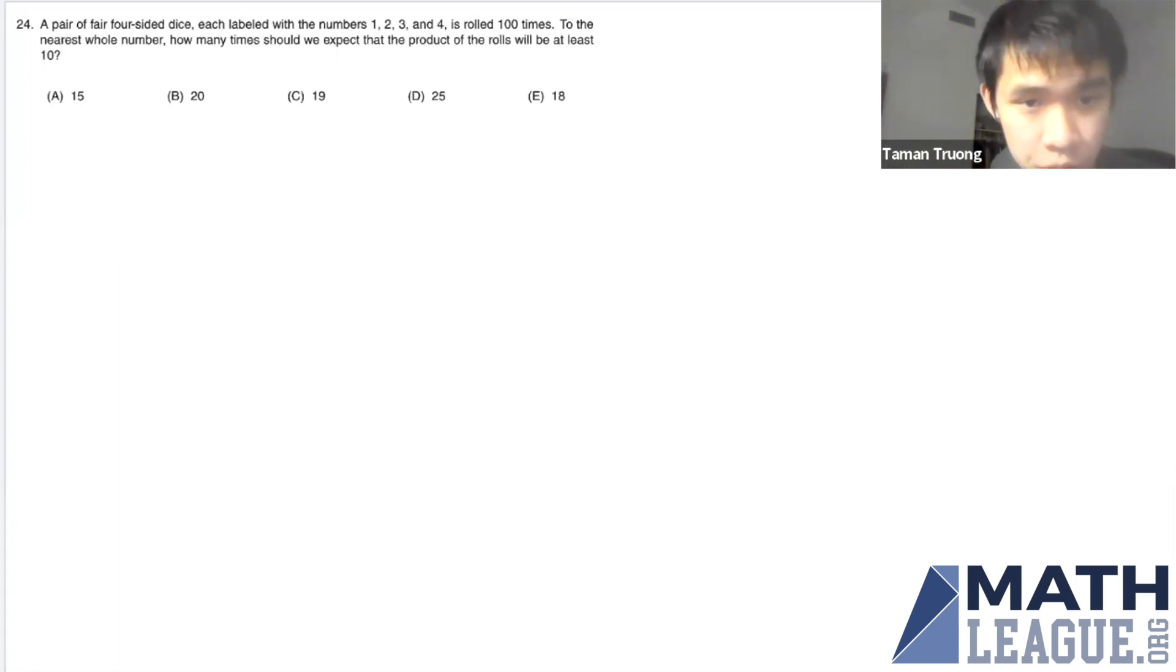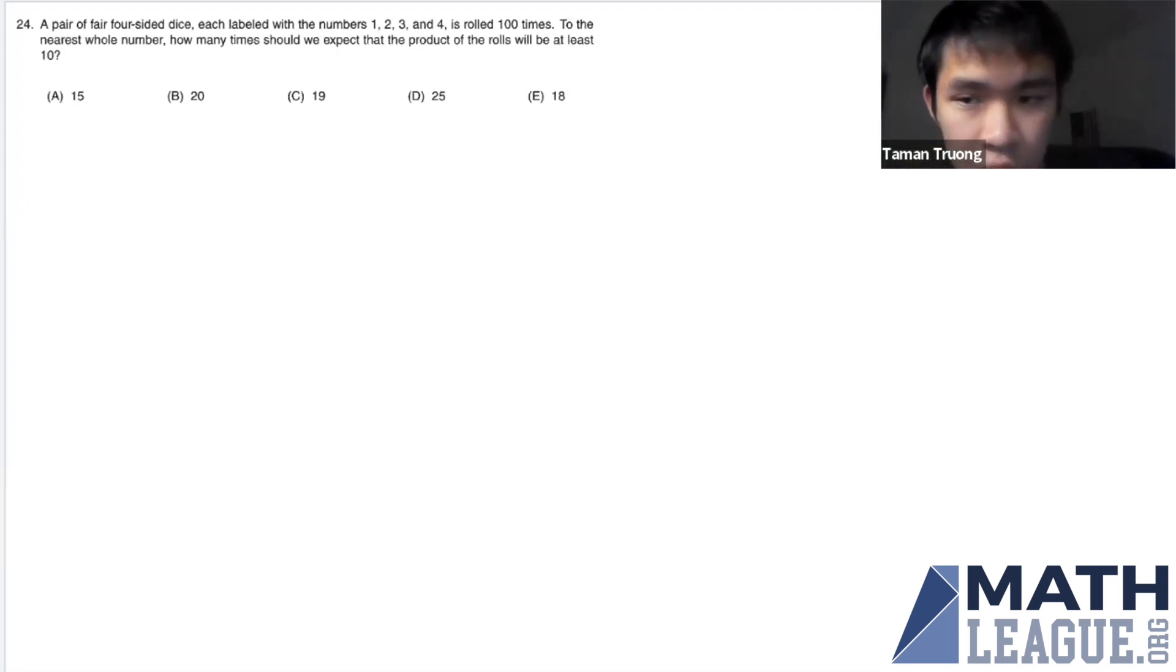A pair of fair four-sided dice, each labeled with the numbers 1, 2, 3, and 4, is rolled 100 times. To the nearest whole number, how many times should we expect that the product of the rolls will be at least 10?